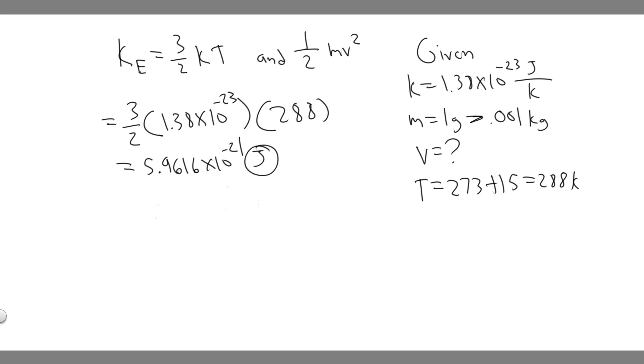And so now what we're saying is this paperclip is going to have the same kinetic energy as this. So 1/2 mv squared equals this number right here. So this is 5.9616 times 10 to the minus 21. So we can multiply both sides by 2, and then we can divide by the mass, and then square root.